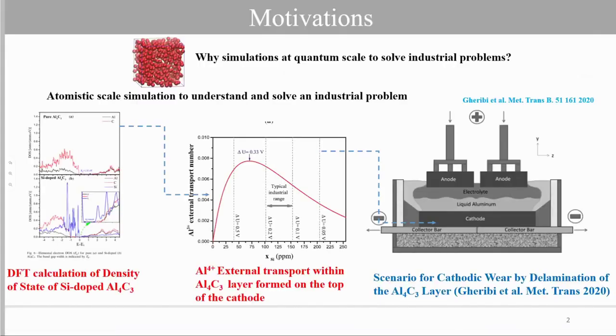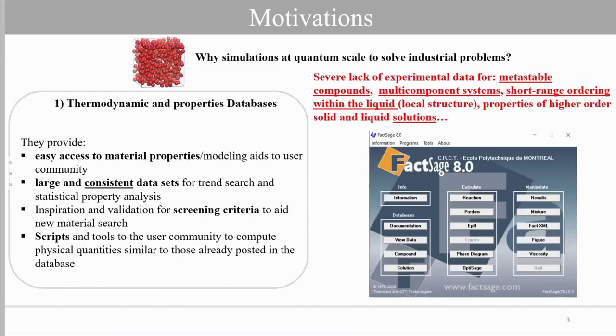So what are the motivations behind the employ of atomistic scale simulation? For reliable process and alloy design, one needs reliable thermodynamic and property databases. However, we observe several lack of experimental data for metastable compounds, multi-component compounds, higher order solid and liquid solutions, and some key properties necessary to build the Gibbs energy function, in particular the local structure which is necessary to develop suitable entropy models.